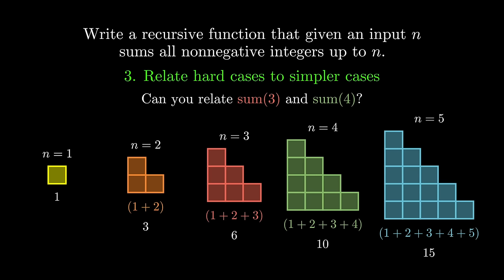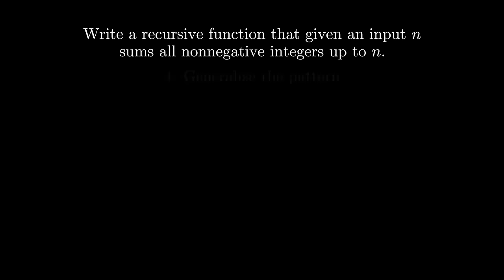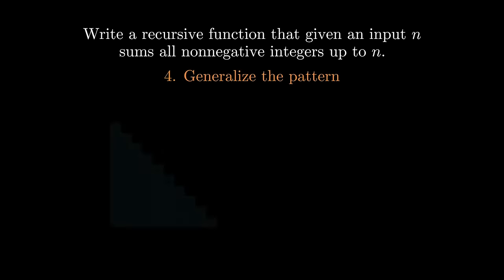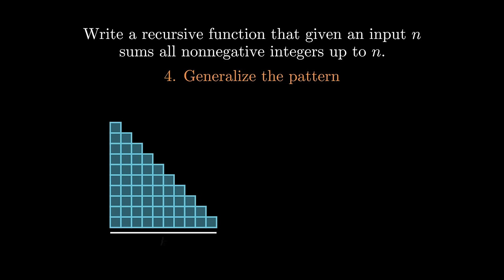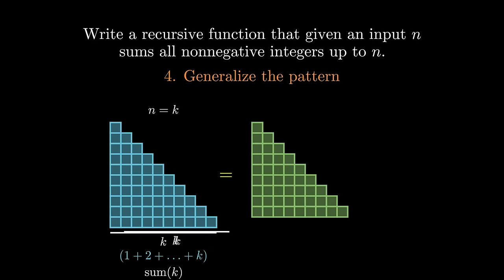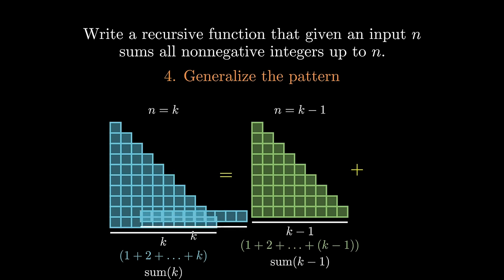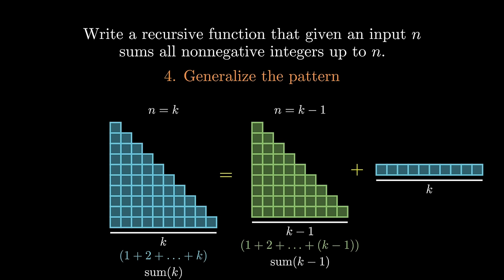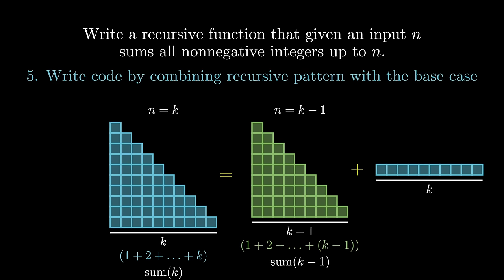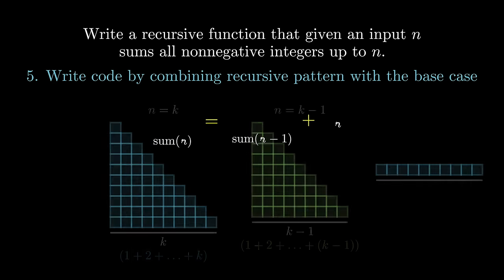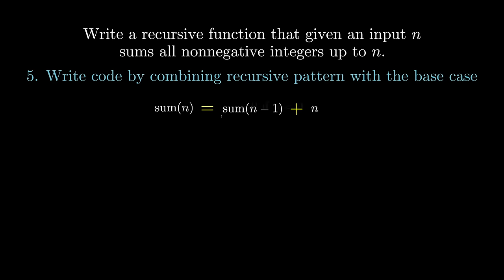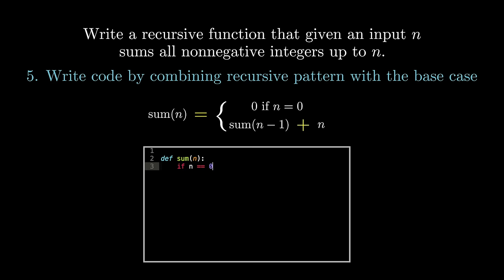This now brings us to the fourth key step, which is to generalize this pattern. Let's say we want to figure out the sum for the input n equals k. We can find the sum by first taking the sum up to n equals k minus 1, and then all we have to do is add k to this value. Once we've generalized the pattern, the last step now involves writing code by combining this recursive pattern with the base case. This actually turns out to be not too hard since the code almost writes itself from our base cases and recursive pattern.